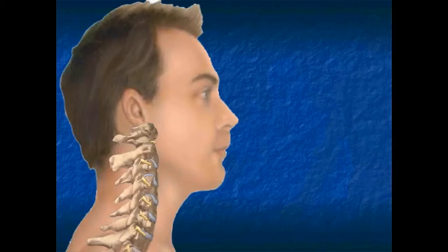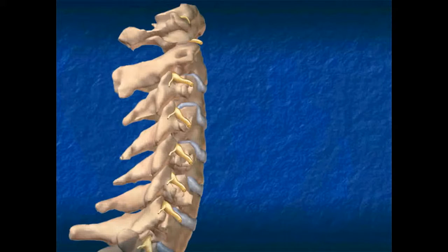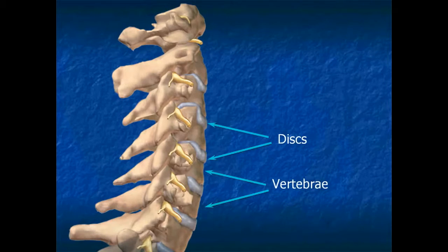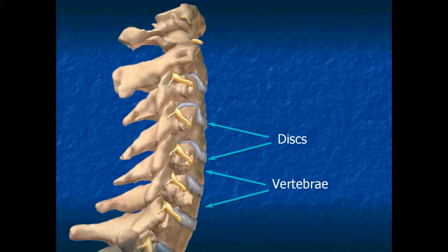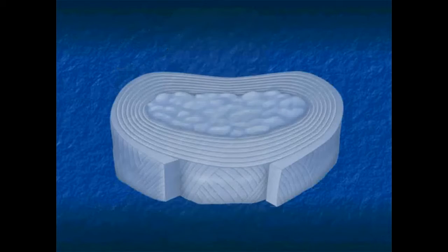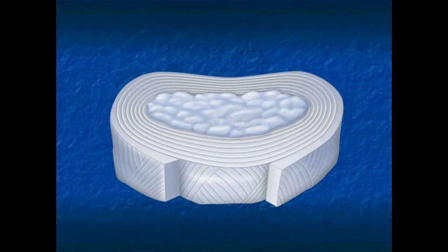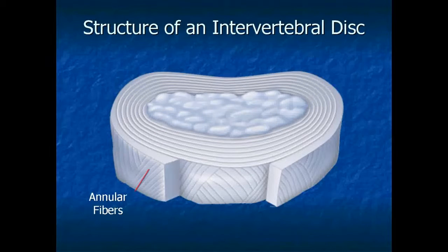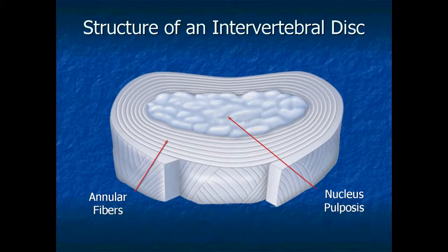There are discs separating each vertebra of the spine. These discs help to separate the vertebrae to allow for movement. They also help create the space between each vertebra through which each nerve root exits the spinal column. Each disc acts as a shock absorber between vertebrae and adds flexibility to the spine. The cumulative effect of the microtraumas or injuries that occur in our lives can cause the fibers of discs to become weak. These fibers on the outer parts of the disc are called the annular fibers.